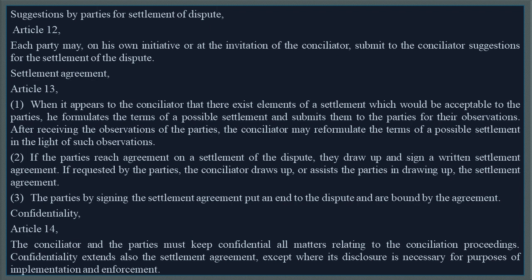Settlement Agreement — Article 13. When it appears to the conciliator that there exist elements of a settlement which would be acceptable to the parties, he formulates the terms of a possible settlement and submits them to the parties for their observations. After receiving the observations of the parties, the conciliator may reformulate the terms of a possible settlement in the light of such observations. If the parties reach agreement on a settlement of the dispute, they draw up and sign a written settlement agreement. If requested by the parties, the conciliator draws up, or assists the parties in drawing up, the settlement agreement. The parties by signing the settlement agreement put an end to the dispute and are bound by the agreement.